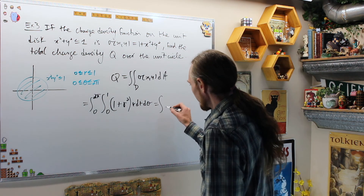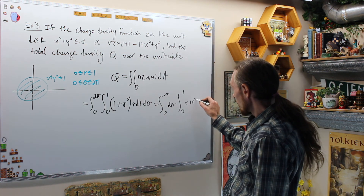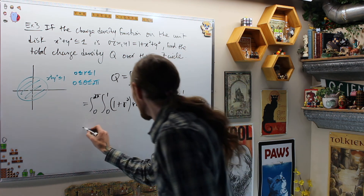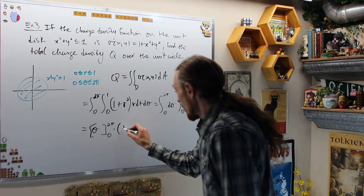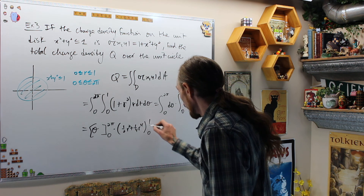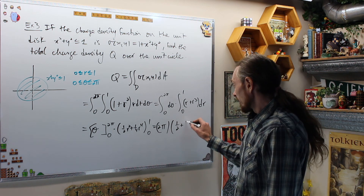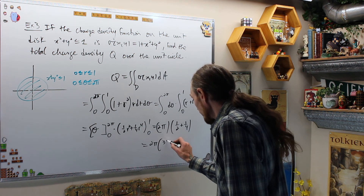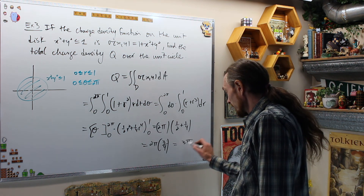This is the integral from 0 to 2π dθ times the integral from 0 to 1 of (r + r³) dr. Splitting it: [θ] from 0 to 2π times [(1/2)r² + (1/4)r⁴] from 0 to 1, which is 2π times (1/2 + 1/4) = 2π times 3/4 = 3π/2.